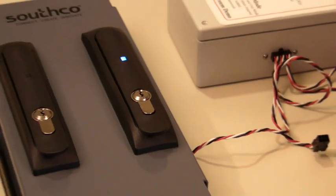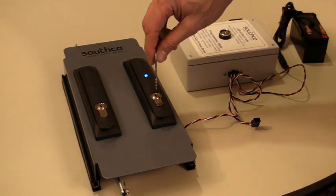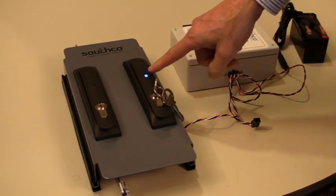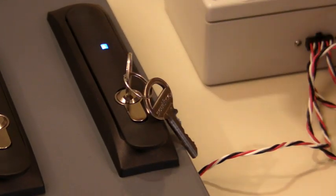So not only do we monitor the states in electronic latching and unlatching, we also monitor if someone were to unlock using a key. You'll notice that we also get the same indication both locally through the LED as well as remotely.